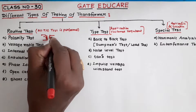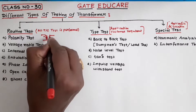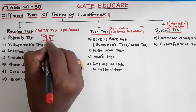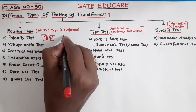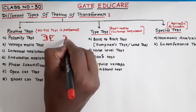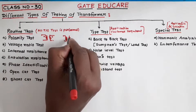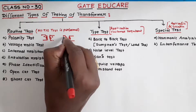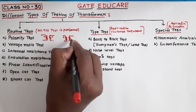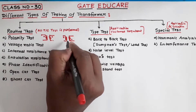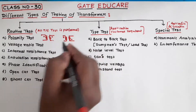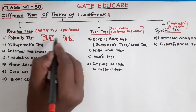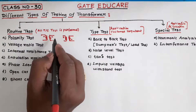If this is dot polarity and this is dot polarity, this is the subtractive polarity. If this is the primary winding and this is the secondary winding, with dot polarity on both, this is the additive polarity. With the help of the polarity test, the polarity of the winding is determined.